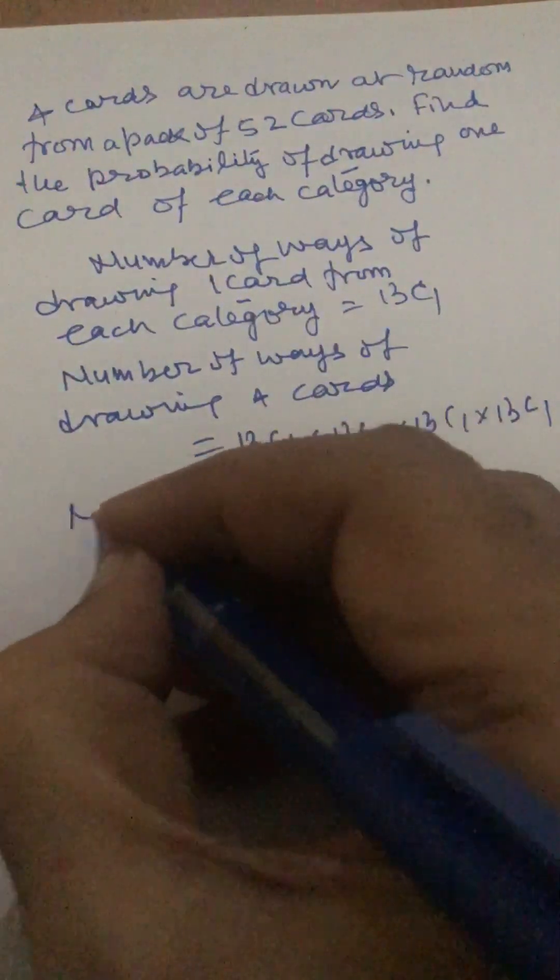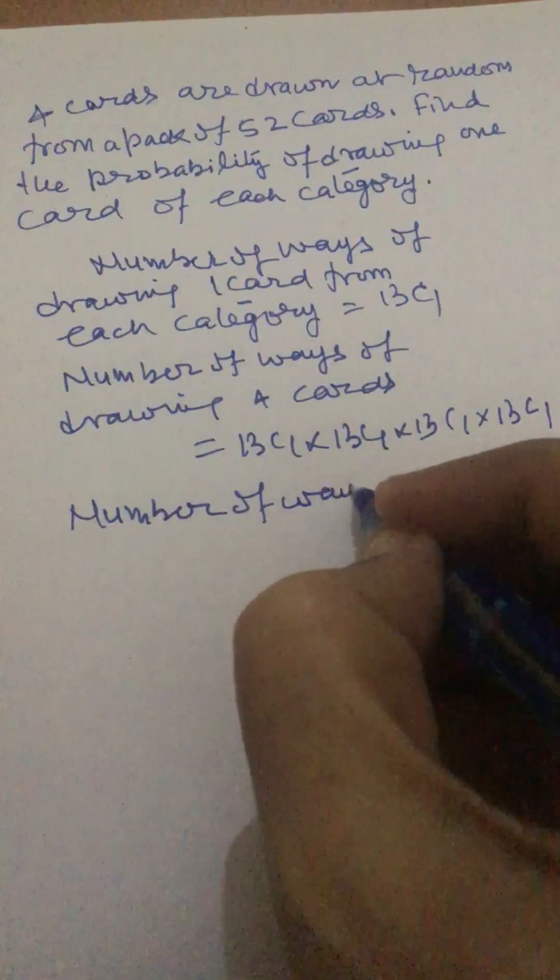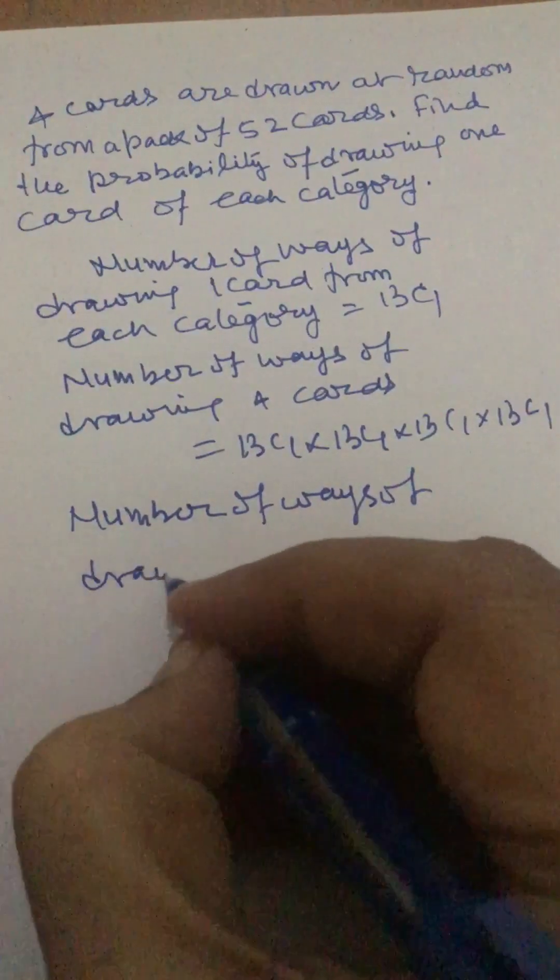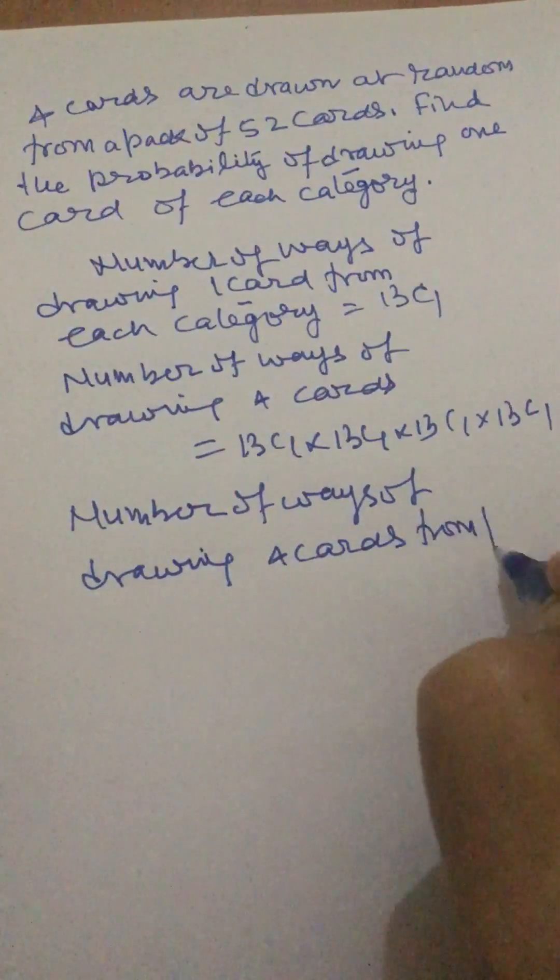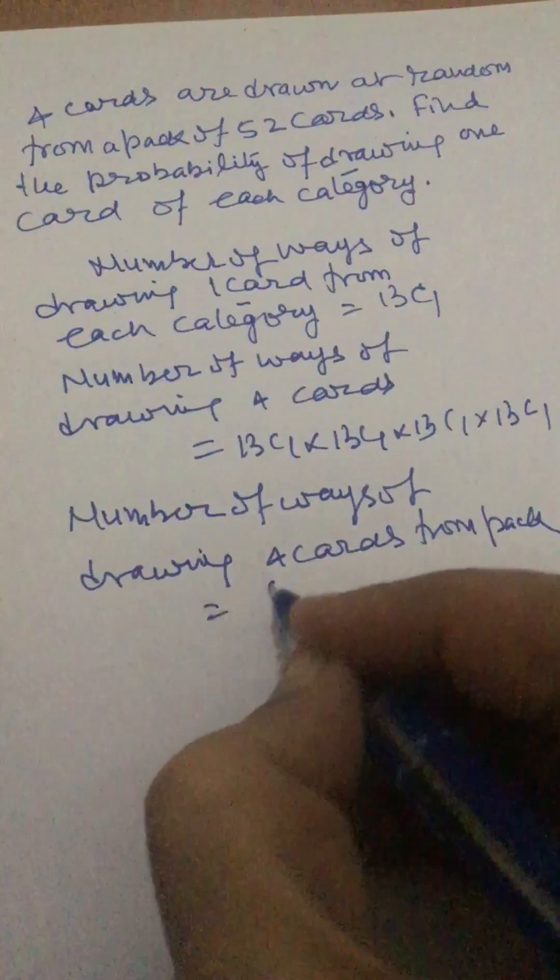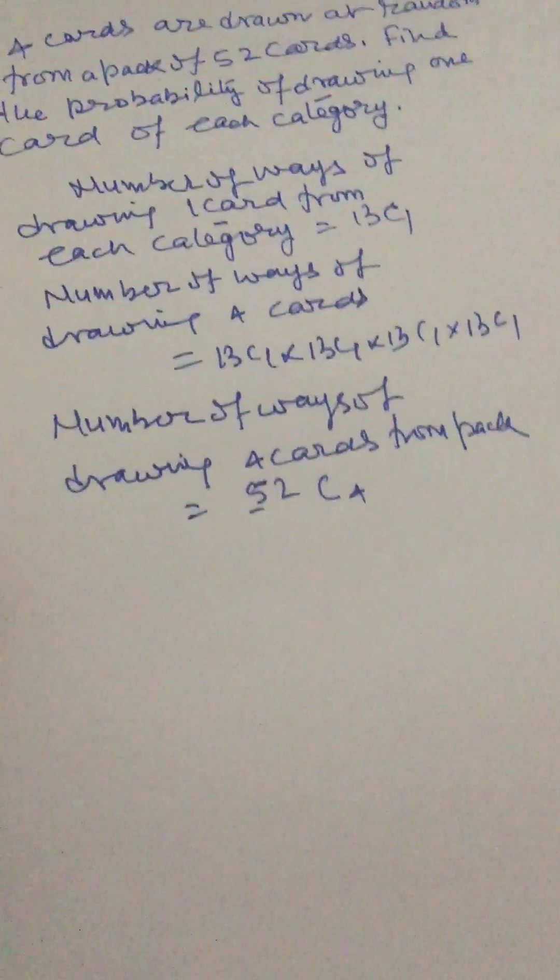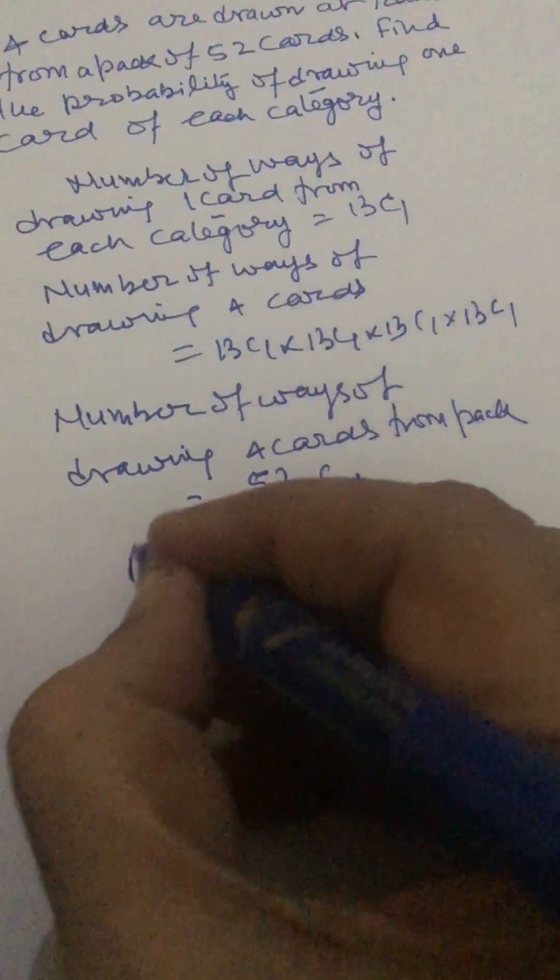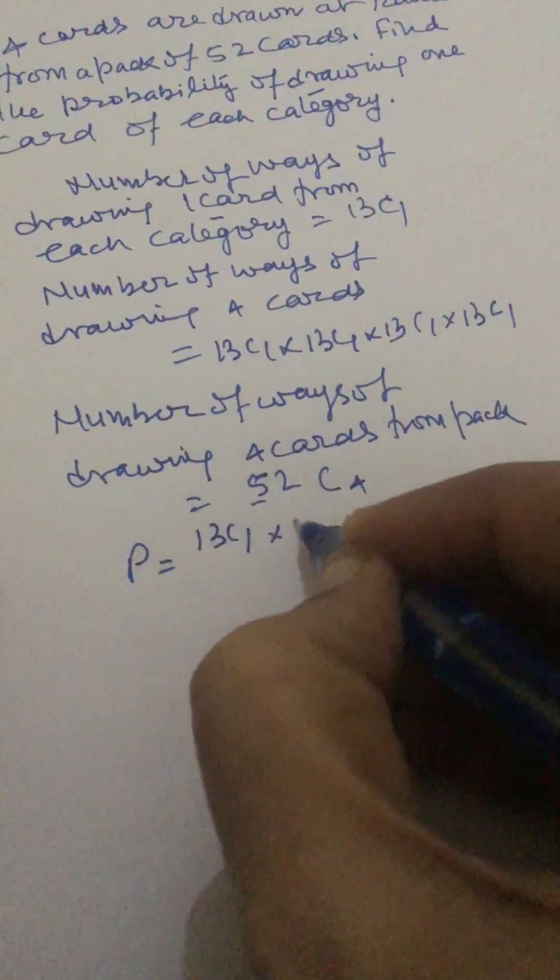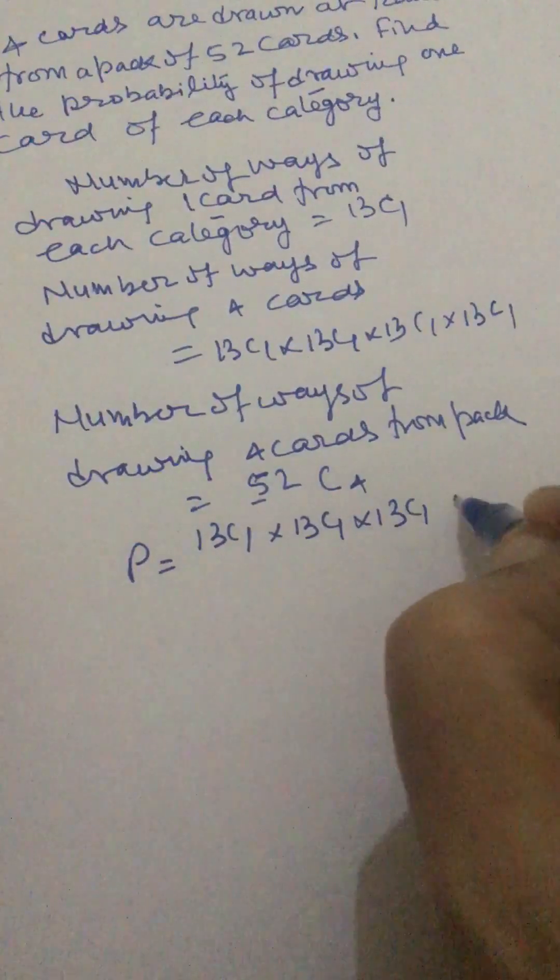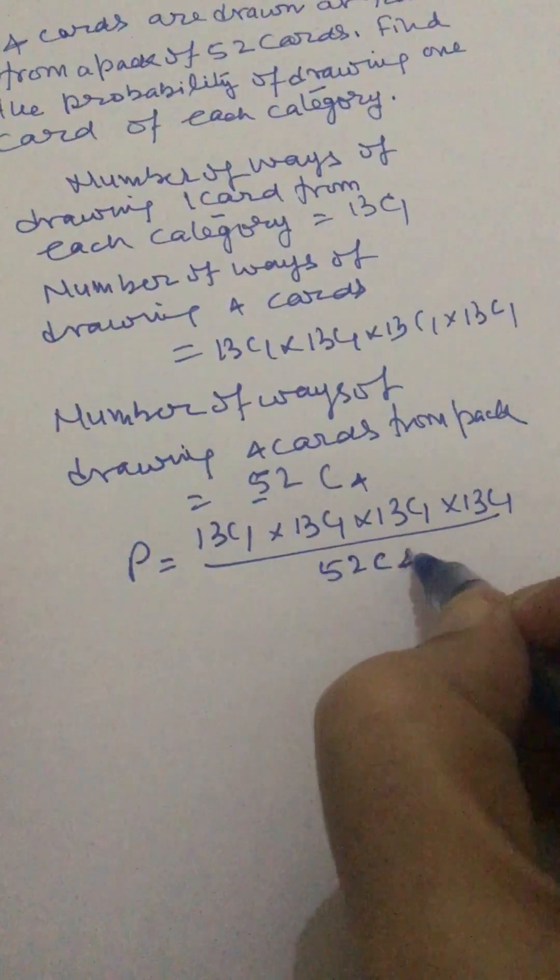Further, number of ways of drawing 4 cards from pack of 52 cards will be 52C4. So probability of drawing one card of each category will be given by 13C1 × 13C1 × 13C1 × 13C1 divided by 52C4.